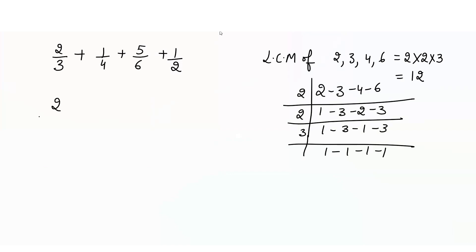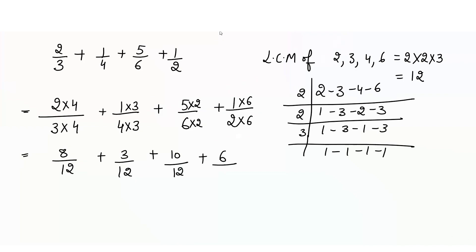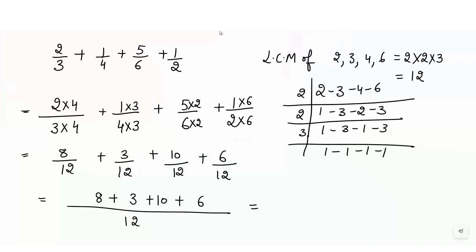Now we make all denominators equal to 12. We see which numbers to use: 3 × 4 is 12, so multiply the first fraction's numerator by 4. 4 × 3 is 12, so multiply the second by 3. 6 × 2 is 12, so multiply the third by 2. 2 × 6 is 12, so multiply the fourth by 6. We get 8 over 12 plus 3 over 12 plus 10 over 12 plus 6 over 12. Writing the denominator once: the numerators sum to 27 over 12. We can simplify with 3, giving 9 over 4. The answer is 9 over 4.